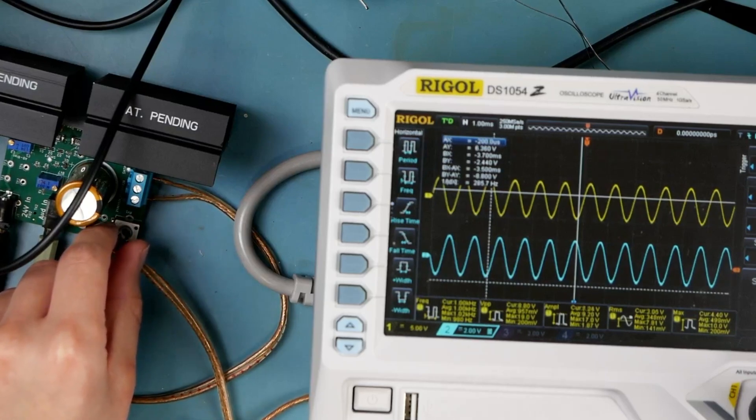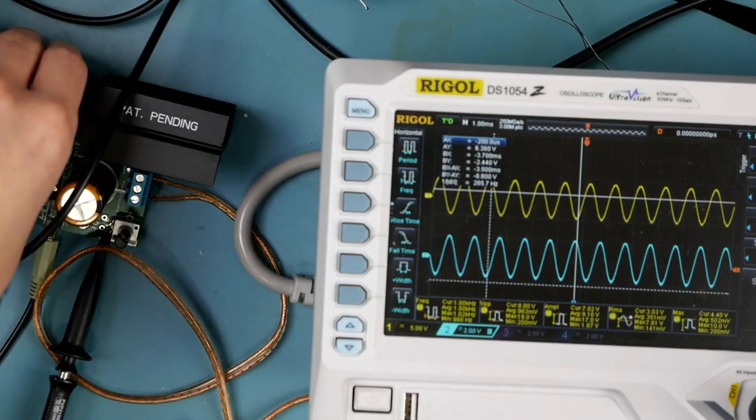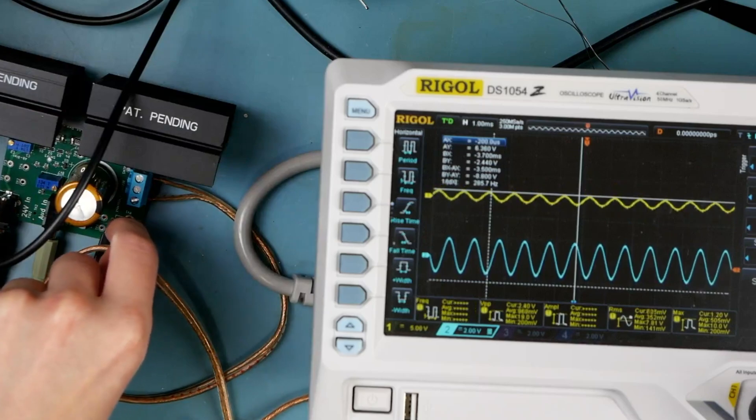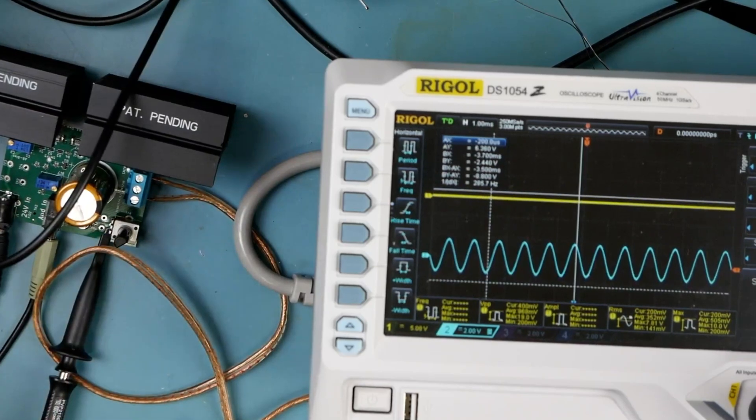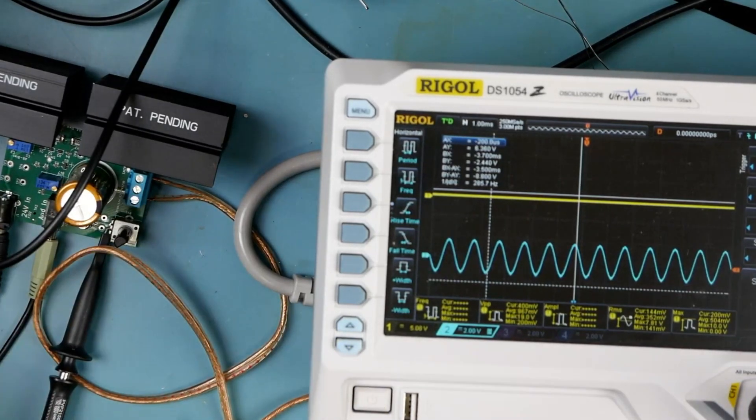And when we get 4.1 volts on the output. Oh boy. Whoa, we're getting a thermal runaway situation. Had to turn it down. I saw the current was steadily climbing on the input. Something was not going as planned.